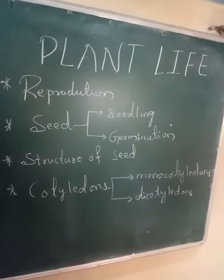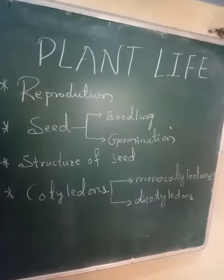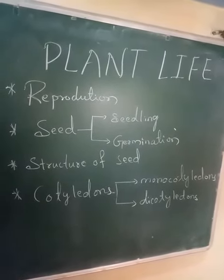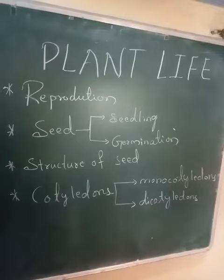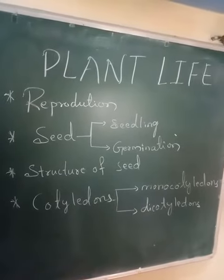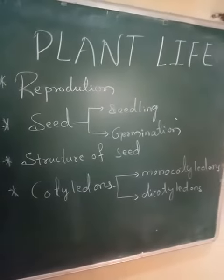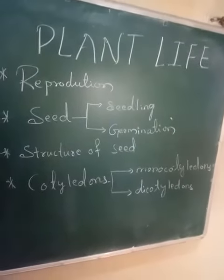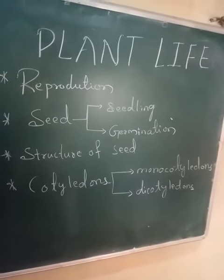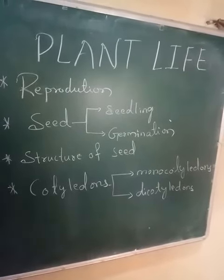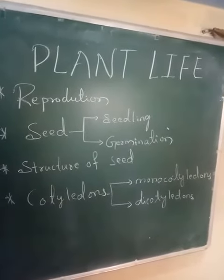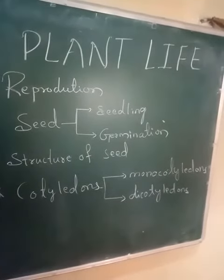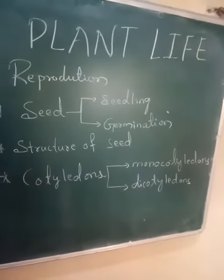For example, rice, wheat, and maize — these are seeds which have only one cotyledon and are called monocotyledons. The seeds of peas, beans, and gram have two cotyledons for their seeds. These are called dicotyledons.